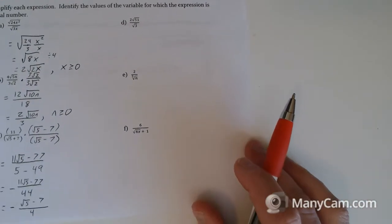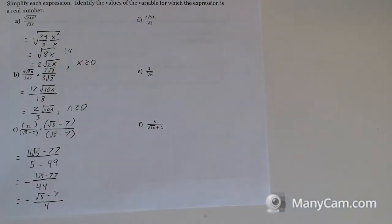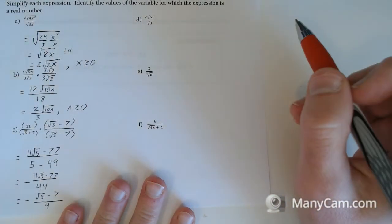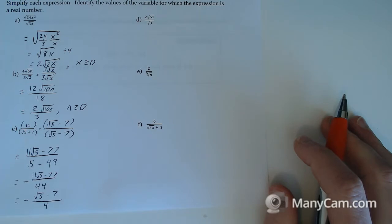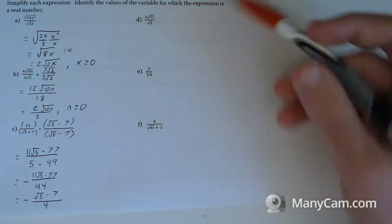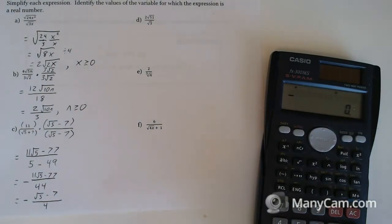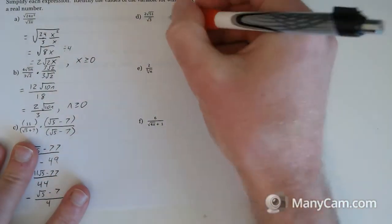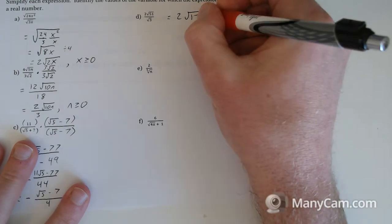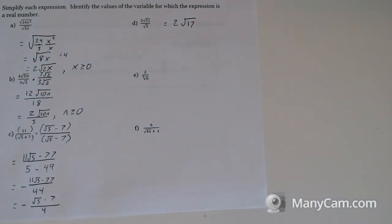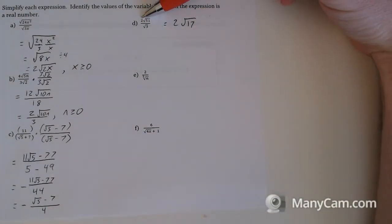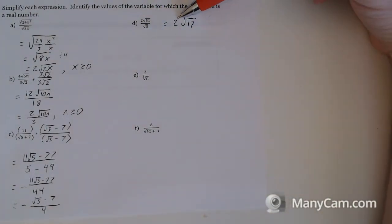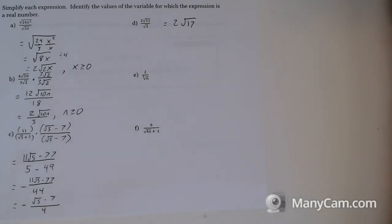Let's try a couple more. This one is actually easy. We can simplify first: does 51 divide by 3? It does — it's 17. So using the division rule, the coefficients divide (2 divided by 1 is still 2) and the radicands divide (51 divided by 3 is 17), giving 2 root 17. That one was clean.